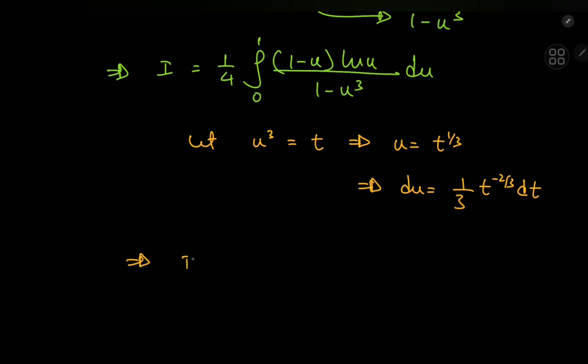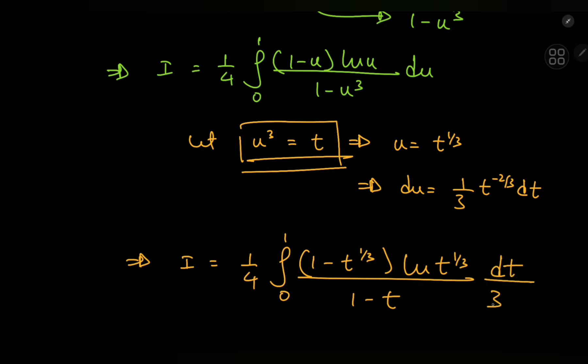So we can write our integral i as a quarter of the integral still from 0 to 1. Again, the limits are not bothered whatsoever. And we have 1 minus t to the 1 third. Log u turns into log t to the 1 third. We're dividing by 1 minus t and the differential element transforms into dt by 3 times t to the 2 thirds.